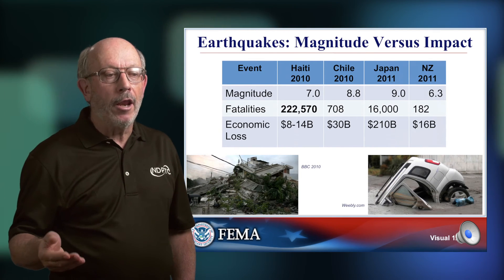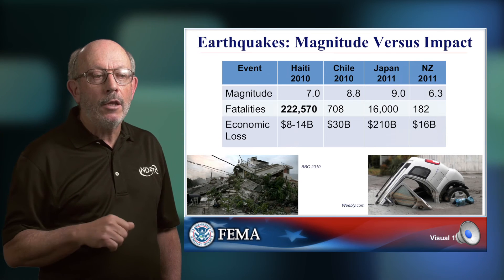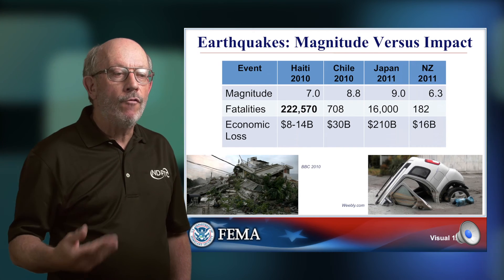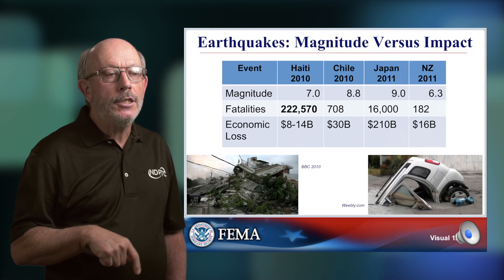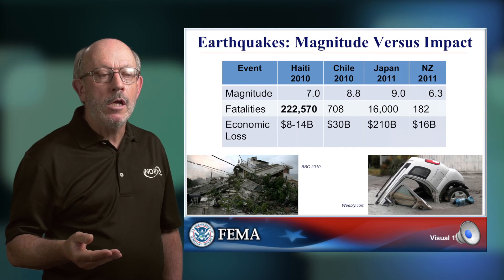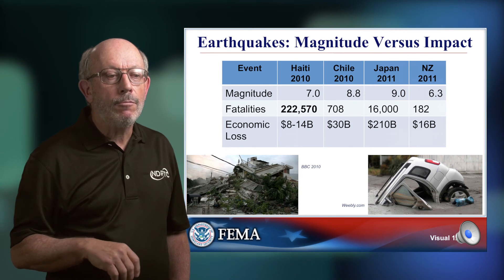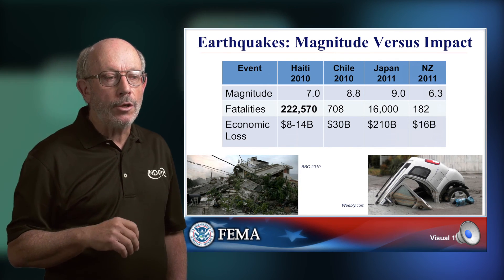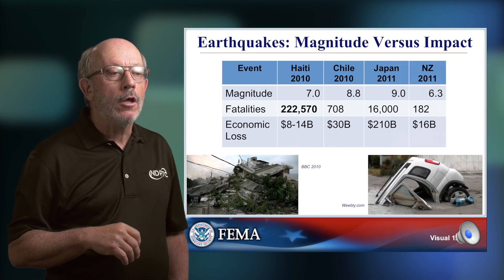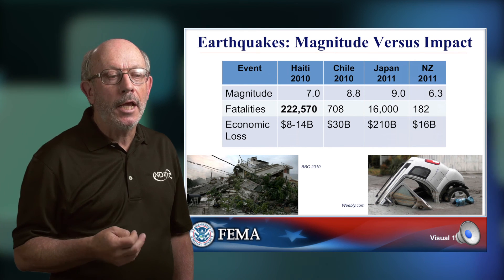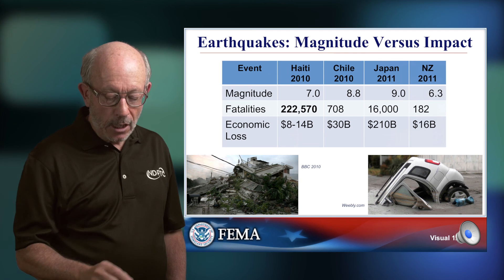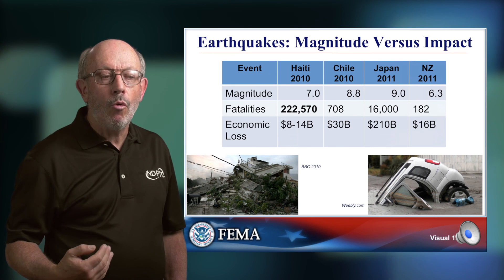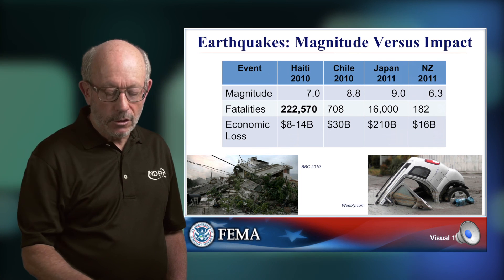Earthquakes tell a very similar story, which we'll address fully in module 14. Four different magnitudes for four events: the destructive Haiti earthquake in 2010, the Chile earthquake at the same time, and two earthquakes in 2011 — Tohoku in Japan and the Christchurch earthquake in New Zealand. The contrasts in fatalities are out of all proportion to magnitude — a quarter million fatalities in Port-au-Prince, Haiti, yet it was the second smallest of the earthquakes. Society, overwhelmingly, is what drives disasters, not nature.